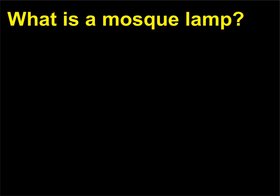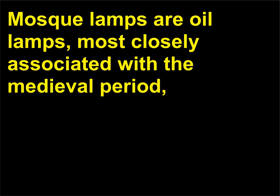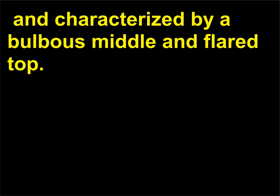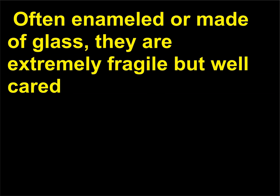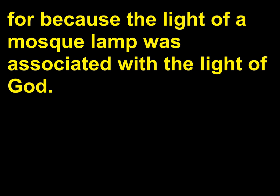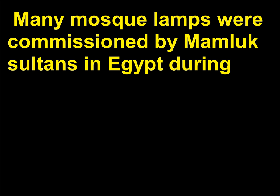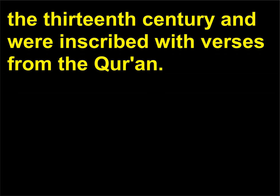What is a mosque lamp? Mosque lamps are oil lamps most closely associated with the medieval period, characterized by a bulbous middle and flared top. Often enamelled or made of glass, they are extremely fragile but well cared for, because the light of a mosque lamp was associated with the light of God. Many mosque lamps were commissioned by Mamluk sultans in Egypt during the 13th century and were inscribed with verses from the Quran.